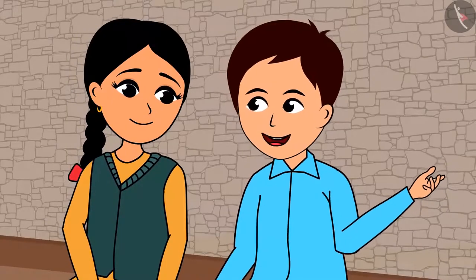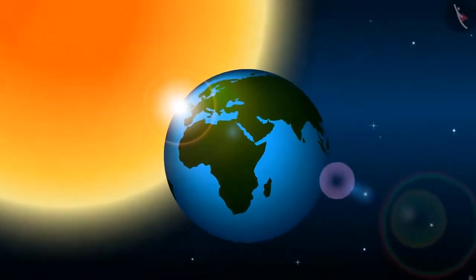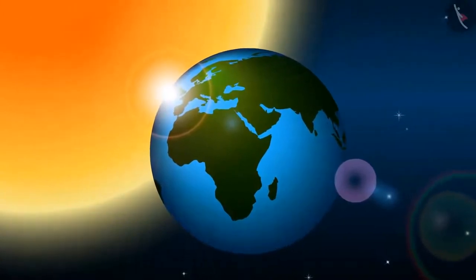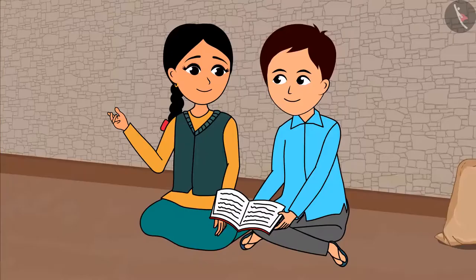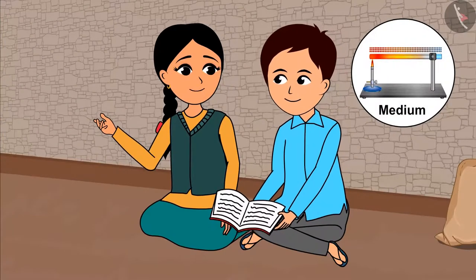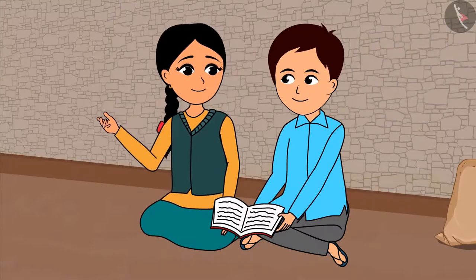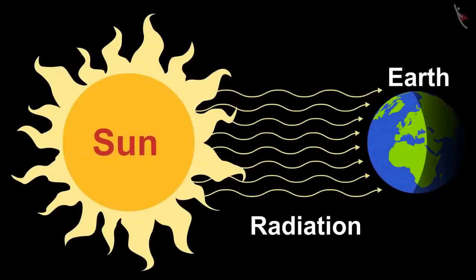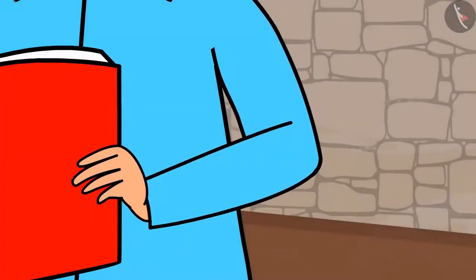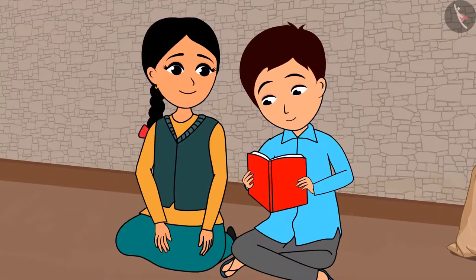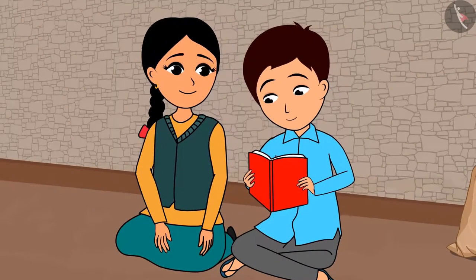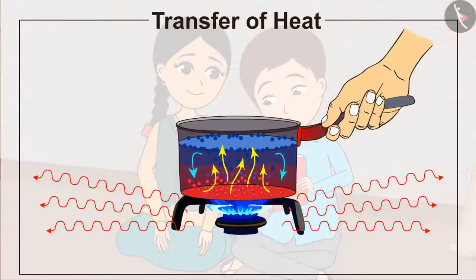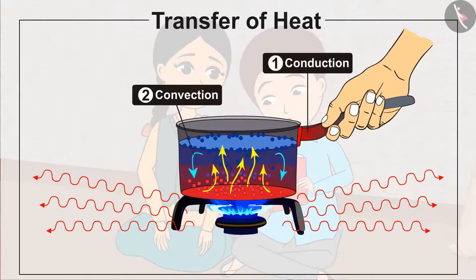The sun also gives us heat, but there is no medium between the sun and the earth. So then how does the heat from the sun reach us? A medium is required for transfer of heat in conduction and convection, so how does transfer of heat take place without a medium from the sun? It is written here that the heat from the sun reaches earth through radiation. There is no medium needed for radiation. That means transfer of heat takes place by three means: conduction, convection and radiation.